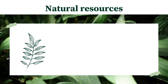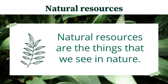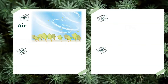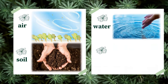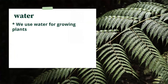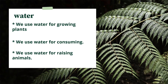We also have natural resources — the things that we see in nature. For example, we have air. Air is very important for living things to breathe. Next, we have soil. We use soil to plant crops for food. Next, we have water. We use water for growing plants, for drinking, and for raising animals.